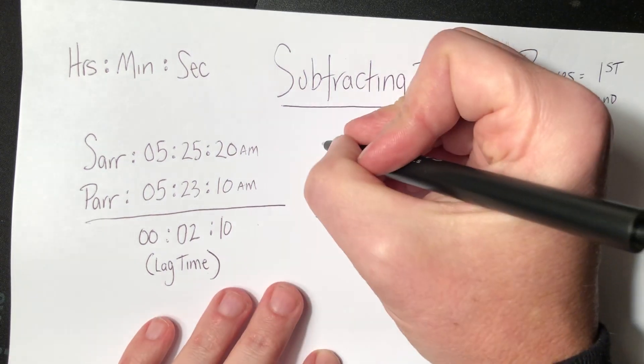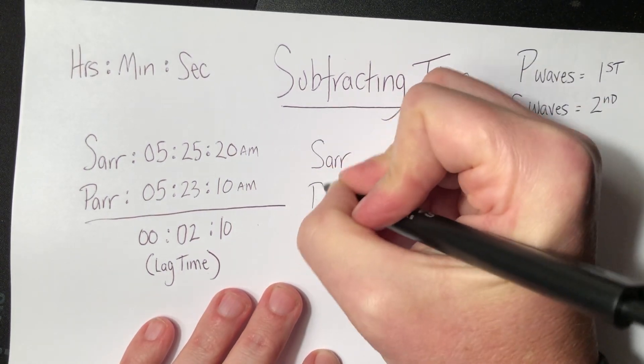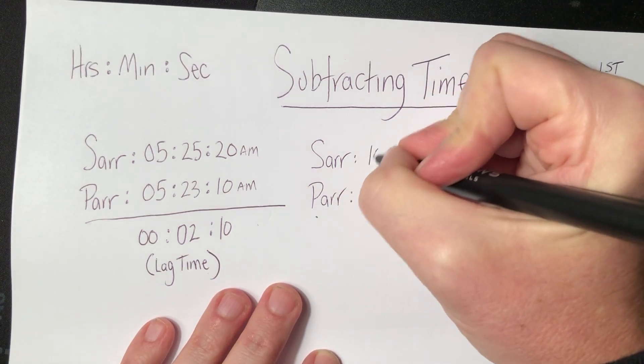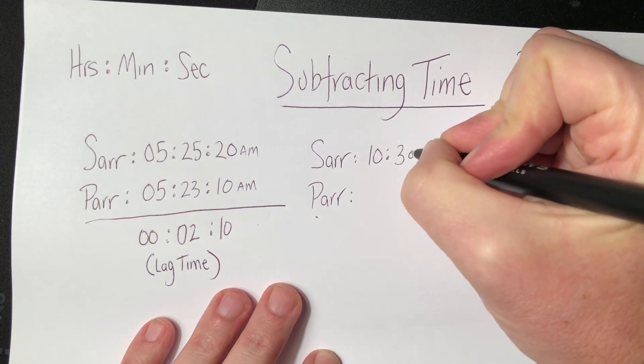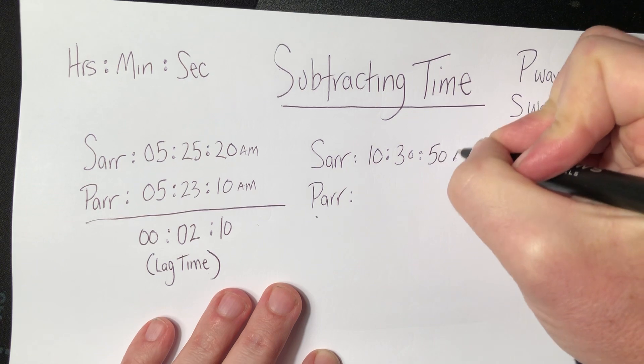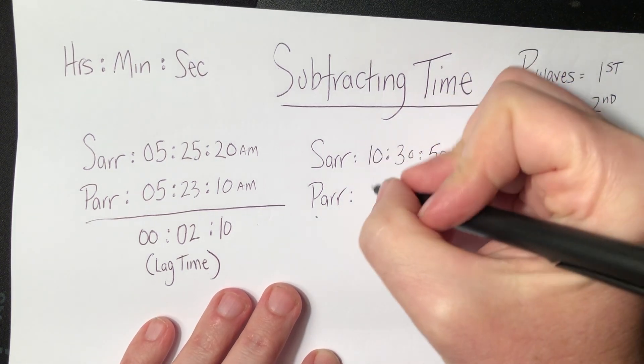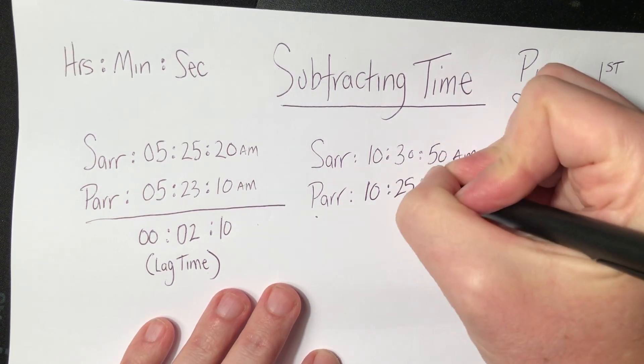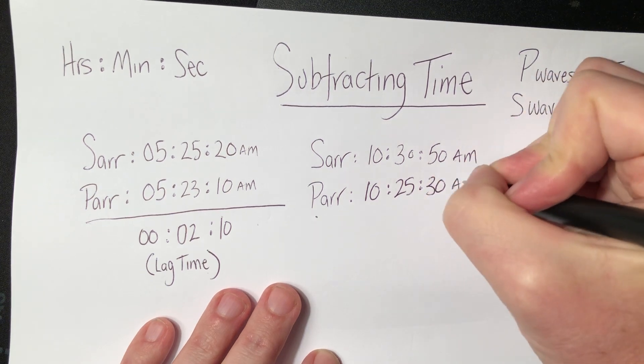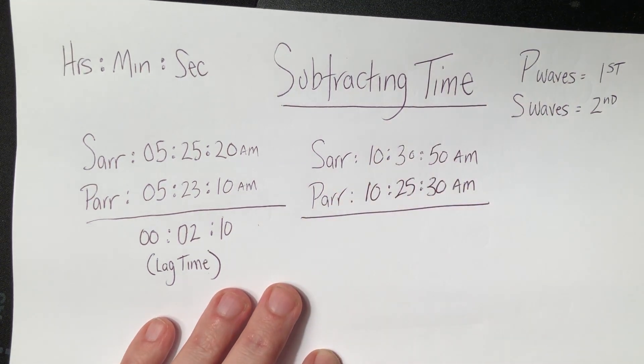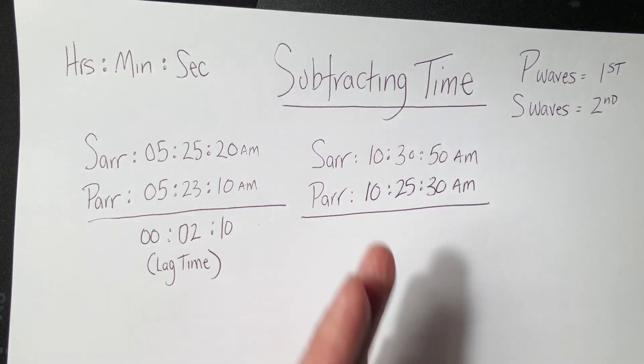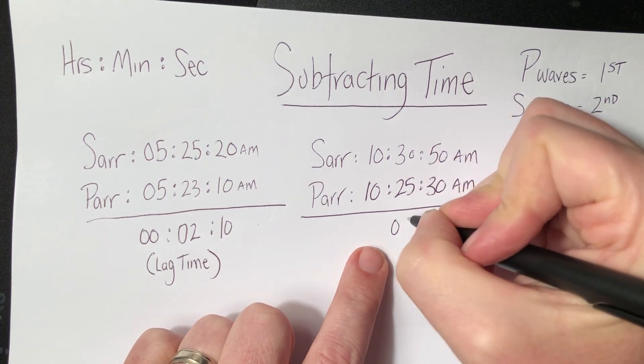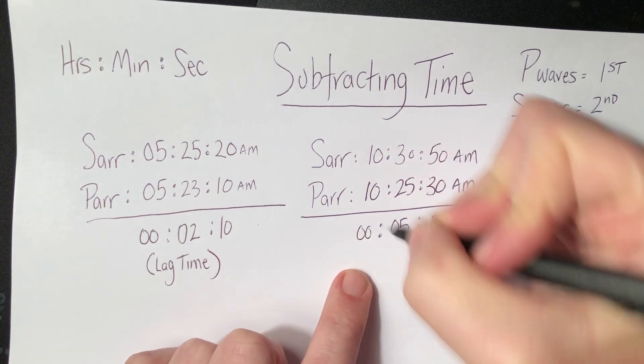Let me do one more example for you. S wave arrival, P wave arrival. 10:30:50 a.m. That's the time of day. P wave, 10. Again, those hours are pretty much going to stay the same. 25:30 a.m. Again, straightforward subtraction. This is kind of how it's always going to be, kind of the straightforward subtraction. 30 from 50 is 20. 25 from 30 is 5. 10 from 10 is 0. Again, lag time.